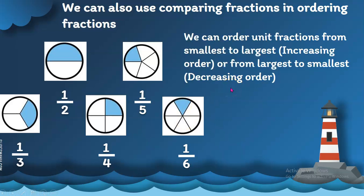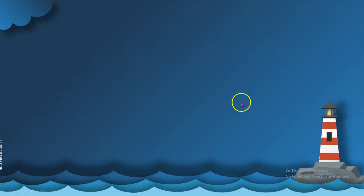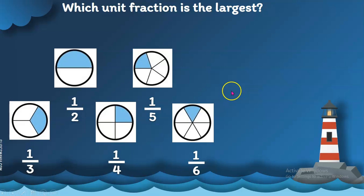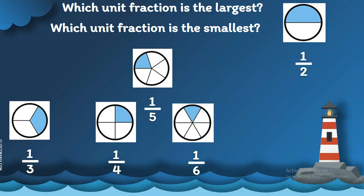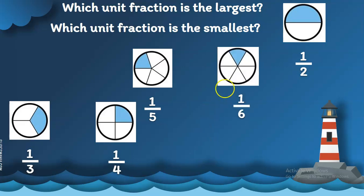We can order unit fractions from smallest to largest, which is the increasing order, or from largest to smallest, which is the decreasing order. Now, which unit fraction is the largest among these fractions? Yes, it's one-half — this is the largest fraction. And which unit fraction is the smallest? Yes, it's one-sixth.